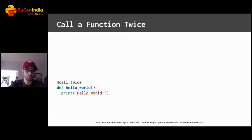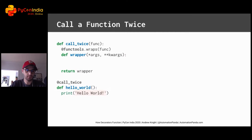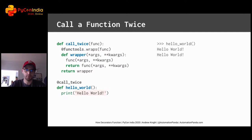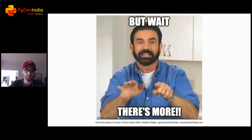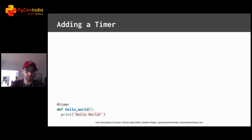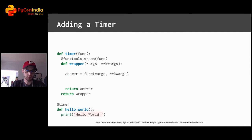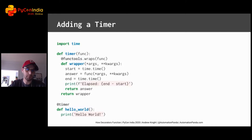But wait, there's more. You can write a decorator to call a function twice. Start with the decorator template and simply call the inner function twice, returning the final value for continuity. You can also write a timer decorator. Start with the template, call the inner function, and surround it with timestamps using the time module. Here we'll be printing the elapsed time as the difference between start and end. Now you can time any function.